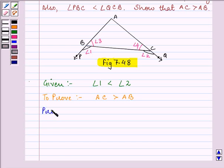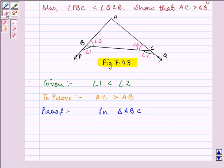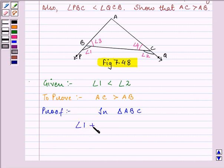Let us start with our proof. In triangle ABC, we can write that angle 1 plus angle 3 is equal to 180 degrees because they are forming a linear pair.